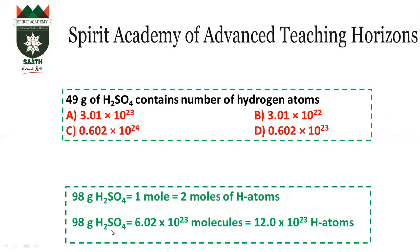If we want to find how many molecules are in 49 grams of H₂SO₄: one mole is 98 grams, which contains 2 moles of hydrogen atoms. Multiplying by Avogadro's number gives 12 × 10²³ hydrogen atoms. Since 49 grams is half of 98 grams, we halve the number: 6 × 10²³. So the answer is C.